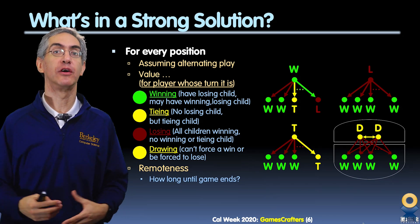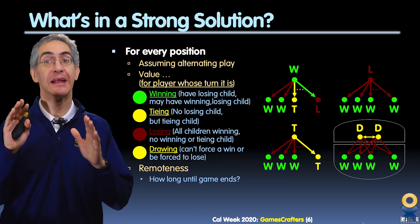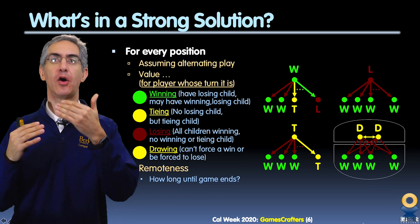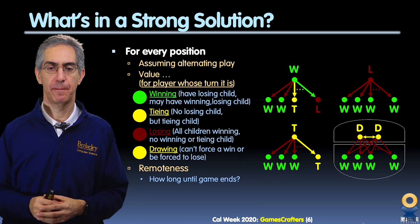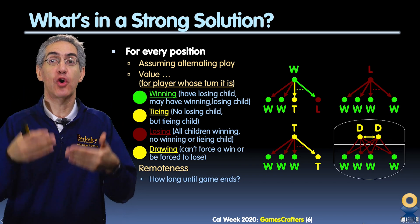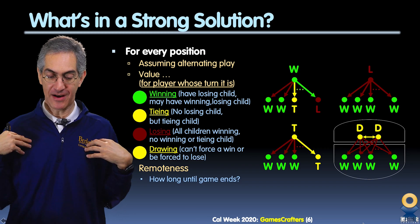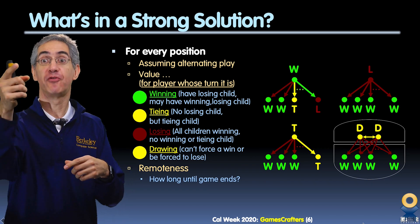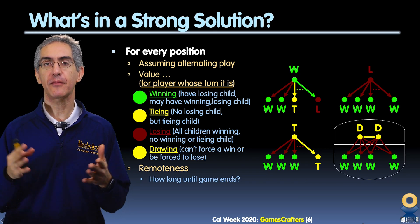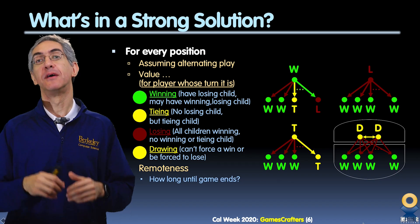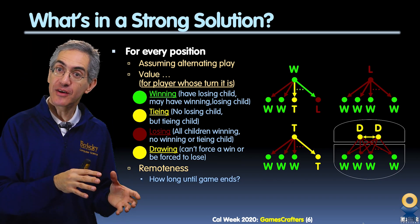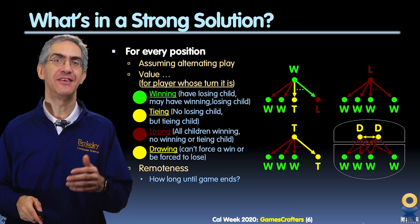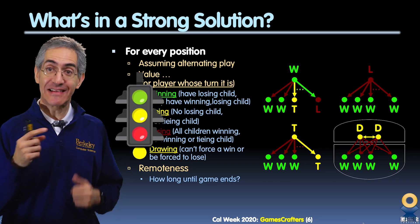The goal is to build a strong solution. What is a strong solution? By the way, this is the hardest slide, so stay with us. We assume always alternating play — your turn, my turn, your turn, my turn. This is the value for the player whose turn it is. So it's egocentric: if it's my turn, the value is the value to me. We've got a winning position, a tie position, a losing position, and a draw position. We color-code these: green for win, yellow for tie, red for lose — it's like an upside-down traffic signal.